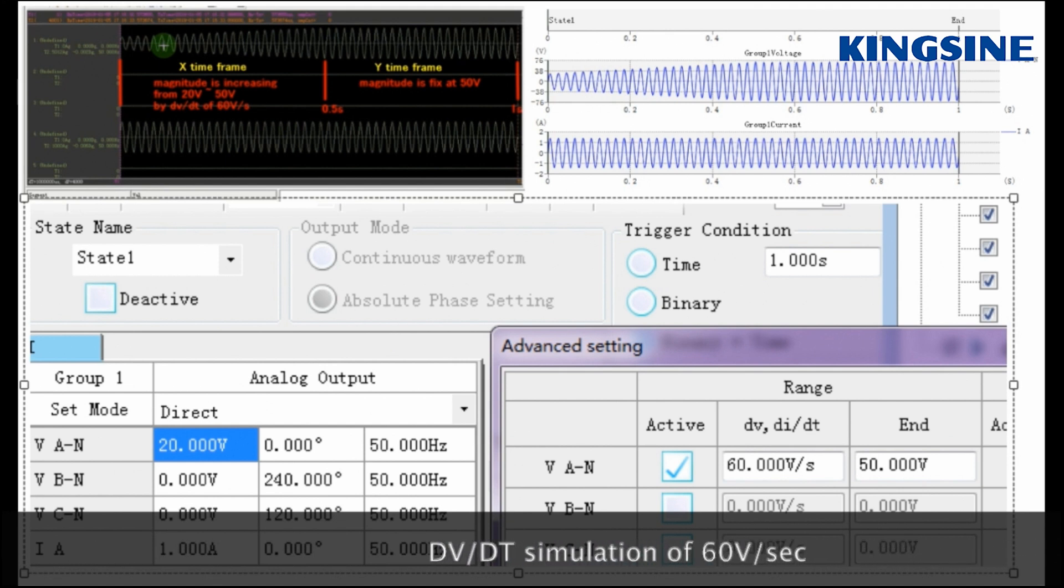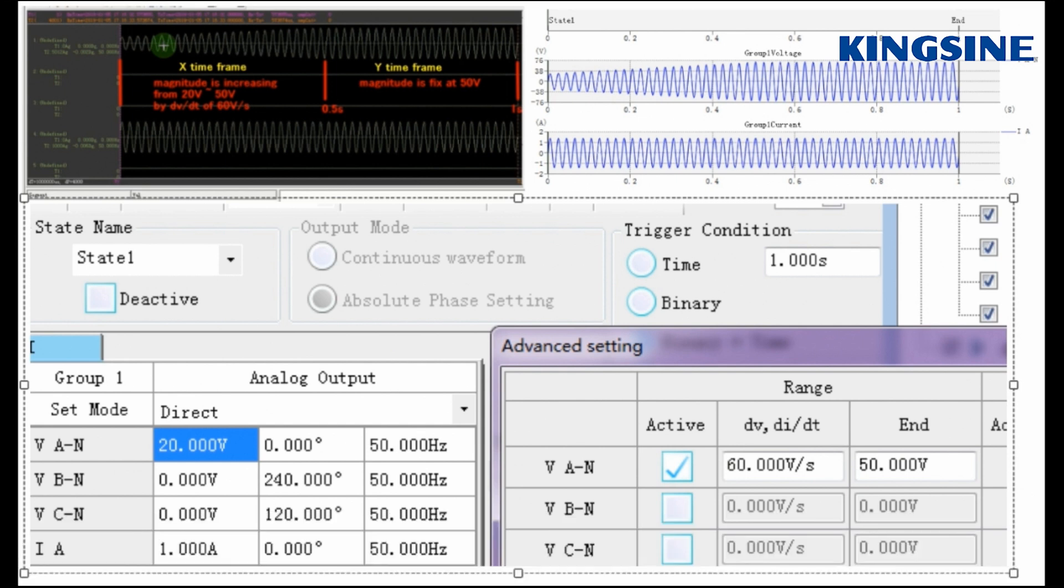Let's now try to simulate a voltage signal of 20V and perform DV by DT of 16V per second. We are setting the test time as one second.